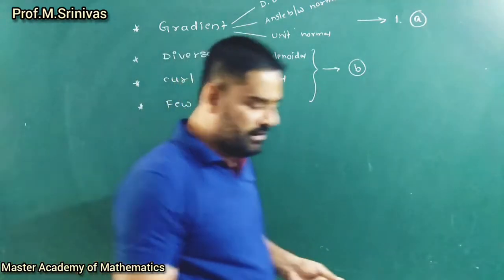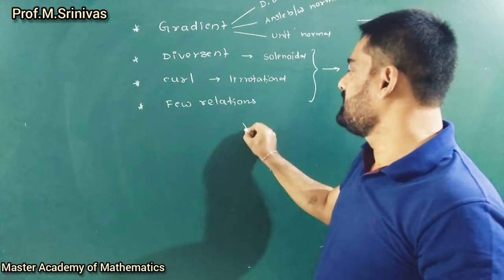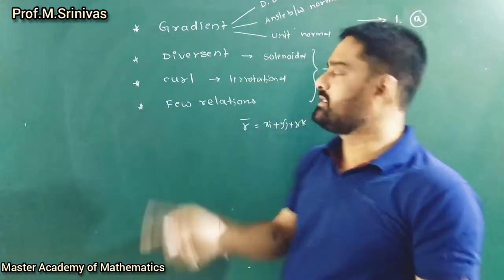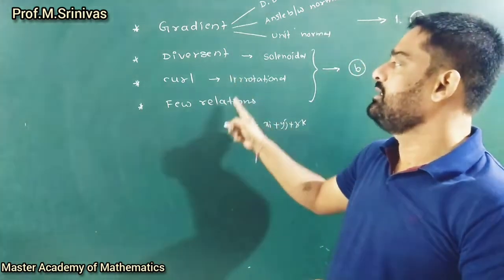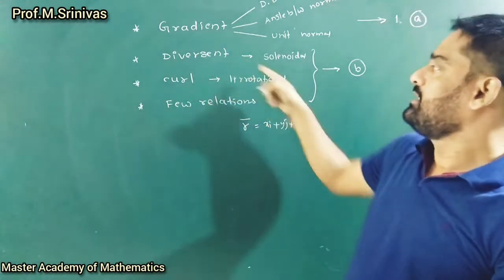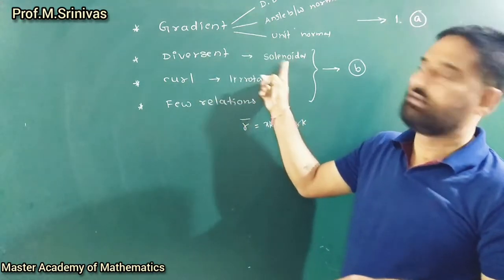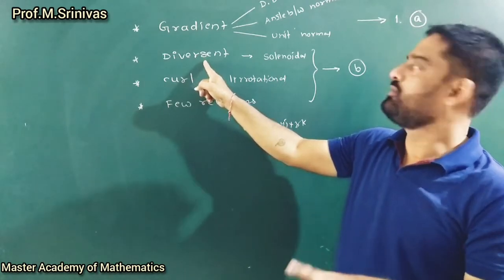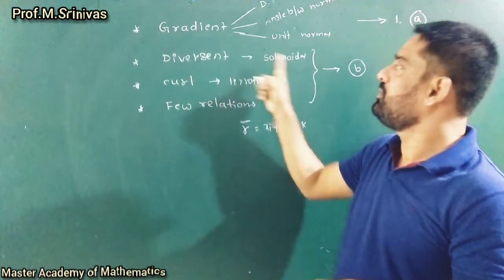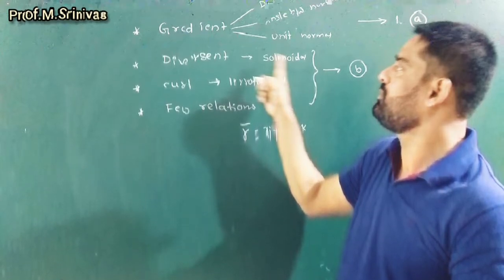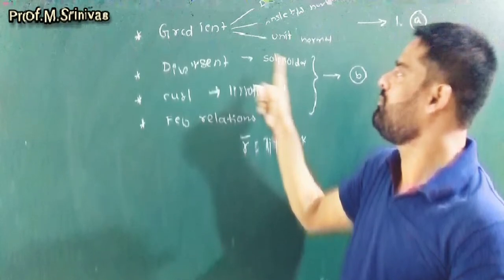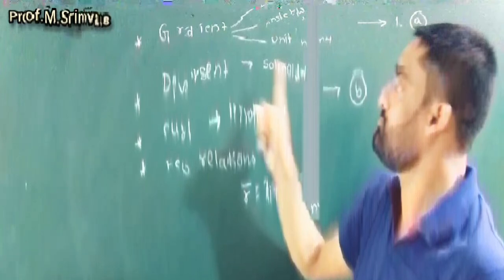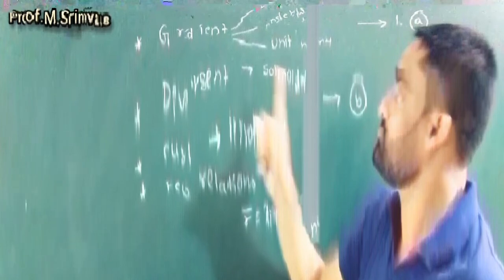When you think about the relations, focus on the positional vector, which is generally denoted by r-bar — that is xi + yj + zk. Using this positional vector you will have certain relations to focus on. When divergence of a vector equals zero, we call it solenoidal. When del cross F equals zero, we call it irrotational. In the case of irrotational, you can also expect a scalar potential — there exists a function phi that satisfies the scalar potential property.